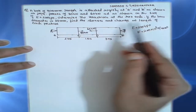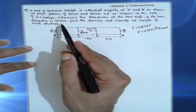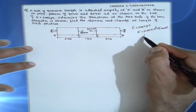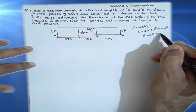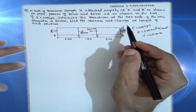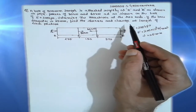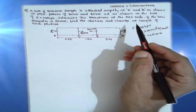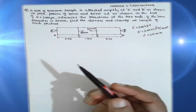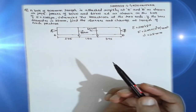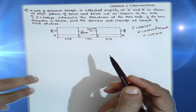The bar diameter is given as D = 25 mm. We have to find the stresses at each section and the change in length, delta L, of each portion.